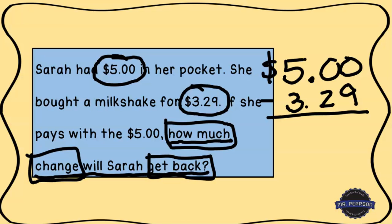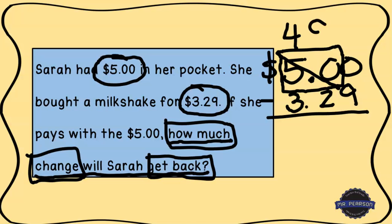This can seem challenging, but really this is just a subtraction-across-zeros problem. I can't take nine from zero, and in the tens place there's also a zero, so what I'm going to do is put a box around the five and the zero, making it fifty groups of ten. I can borrow from fifty, so I'll cross it out, take one group of ten away — fifty becomes forty-nine — and that gives a group of ten in the ones place. Now I can subtract: nine from ten gives me one; in the tens place, nine minus two is seven; in the hundreds place, four minus three is one.